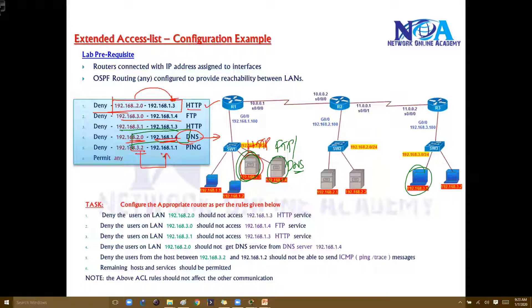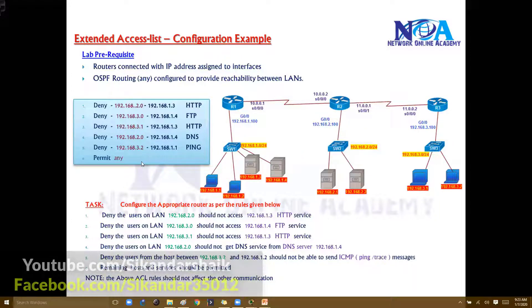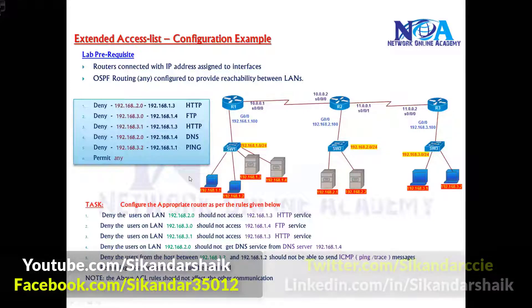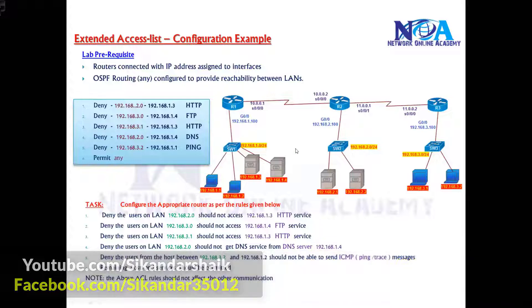Then if 3.2 is trying to communicate or send a ping request, the ping should be blocked. These are the rules, and the rest of the traffic should be permitted — I want to permit all remaining traffic. Now these are the rough rules we are going to take and we will write them down on the routers.